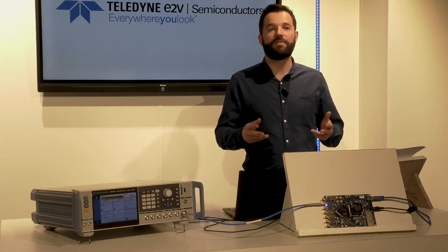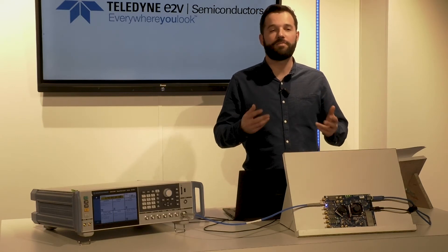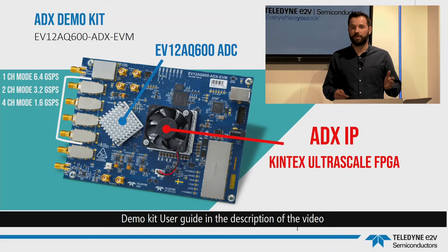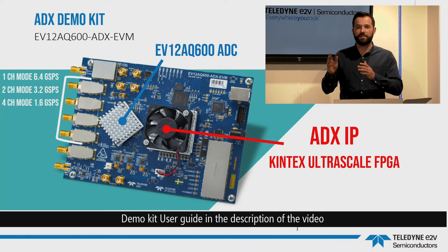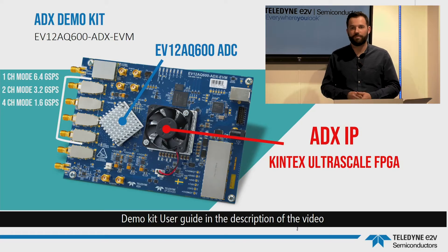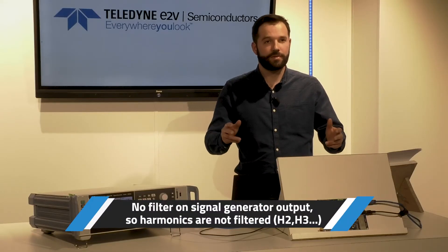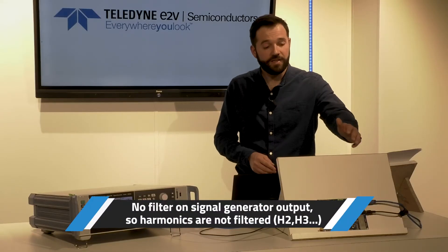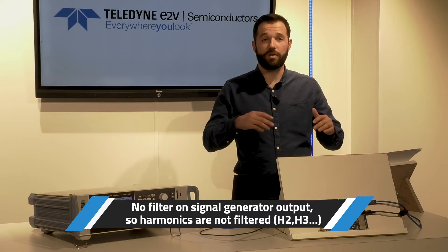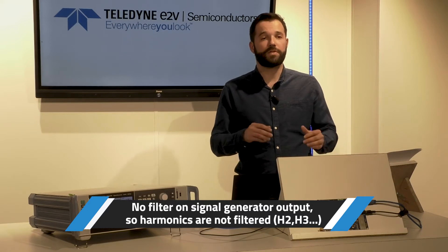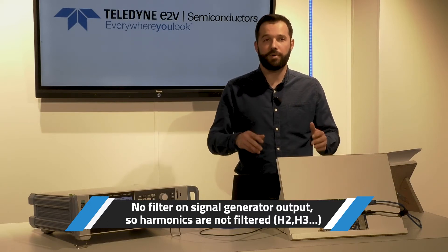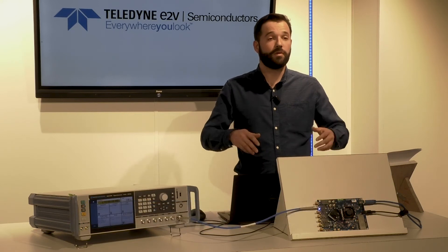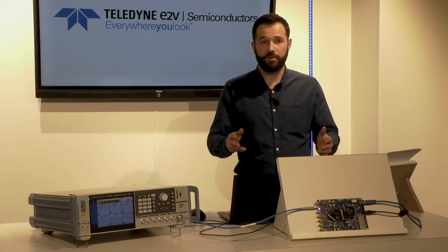Now you know how to simplify your calibration process, and today you can start evaluating the ADX2 IP with this demonstration kit. In this case, the ADC is configured in one-channel mode with a sampling frequency of 6.4 gigasamples per second, so the four cores are interleaved.